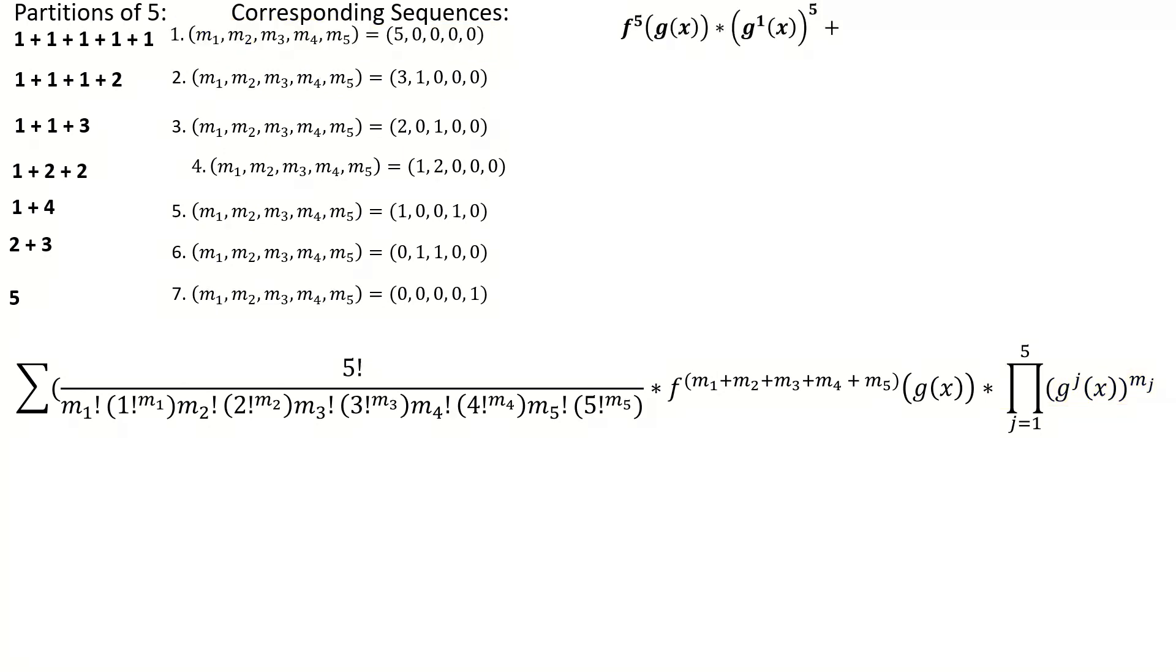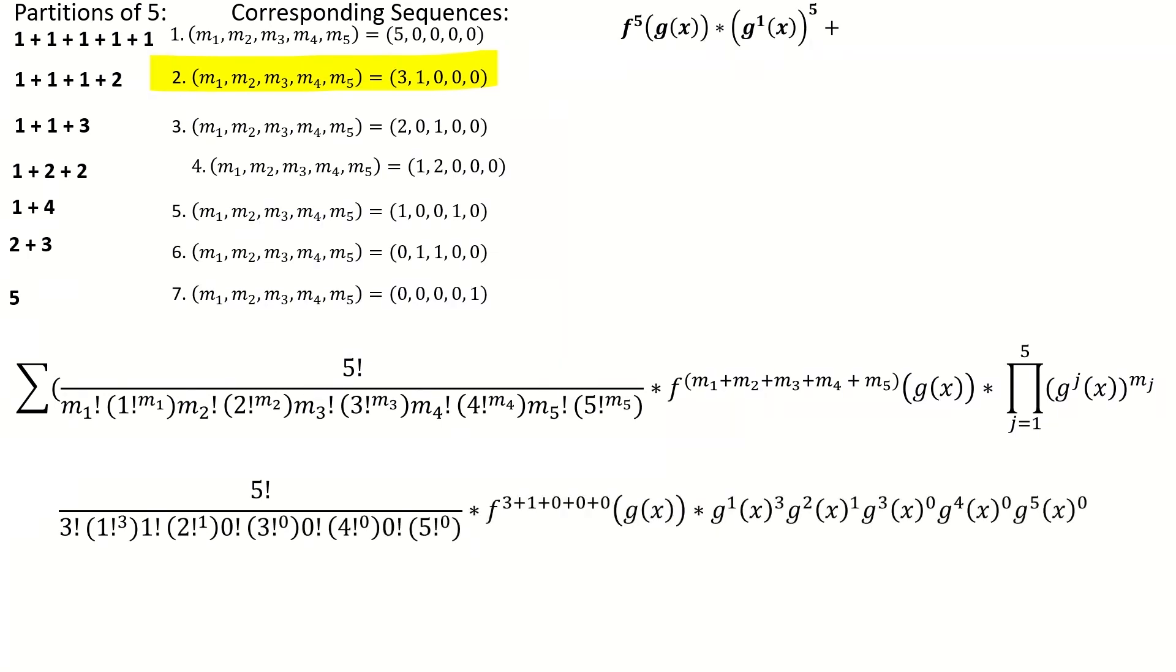That's our first summand. Here's the second summand, corresponding to the sequence m1 equals 3, m2 equals 1, and m3 through m5 equal to 0.